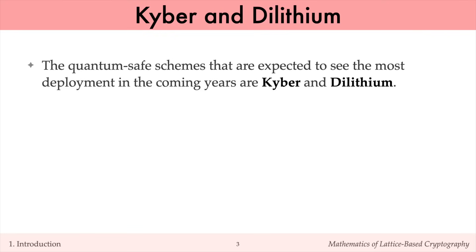Of the quantum-safe schemes standardized by NIST, the ones expected to see the most deployment in the coming years are Kyber, which is a key encapsulation mechanism, and Dilithium, which is a signature scheme. Kyber and Dilithium are lattice-based schemes, and in particular, use lattices that are derived from modules of polynomials.